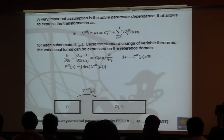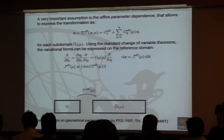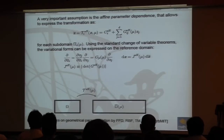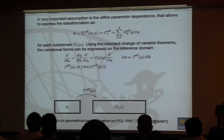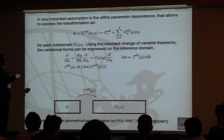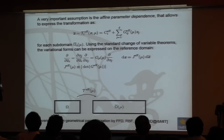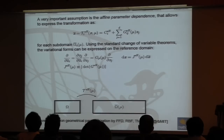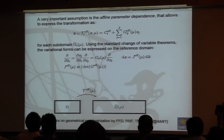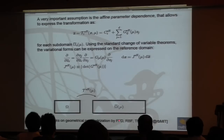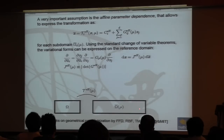We are also interested in parametrized geometry. The idea is simple: we have a reference domain and a parametrized domain — for example, the aspect ratio of a cavity — and the geometrical transformation involves translational terms and a rotational tensor. More complex parametrizations include free-form deformation, radial basis functions, transfinite mapping, and techniques based on domain decomposition.